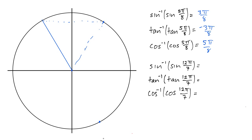Okay, what about this second angle? 12π over 7, let's draw that in. That's going to be in the fourth quadrant, maybe about right there.